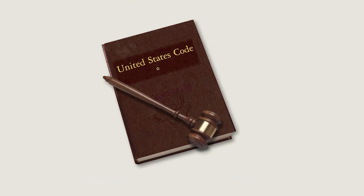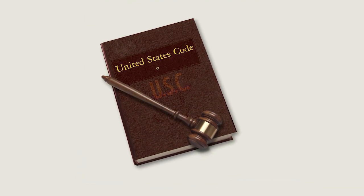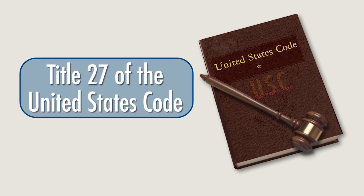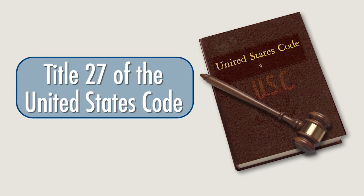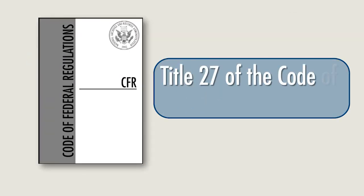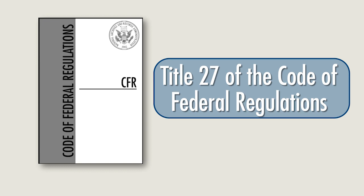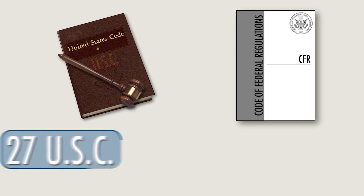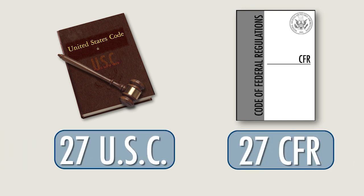Throughout the presentation, you'll see references to 27 U.S.C., which stands for Title 27 of the United States Code. That's where the Trade Practice Laws of the Federal Alcohol Administration Act, or FAA, are codified. You'll also see references to 27 CFR, which stands for Title 27 of the Code of Federal Regulations, and that's where the Federal Trade Practice Regulations are codified. Please make note of the citations made to either 27 U.S.C. or 27 CFR, as that's where you'll find the full text of the specific law or regulations cited.